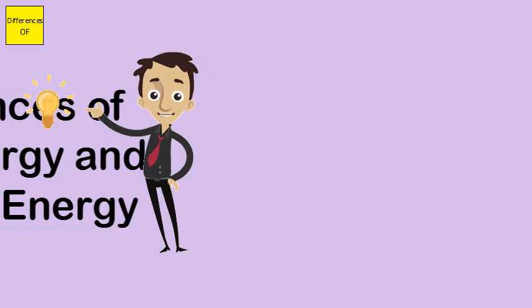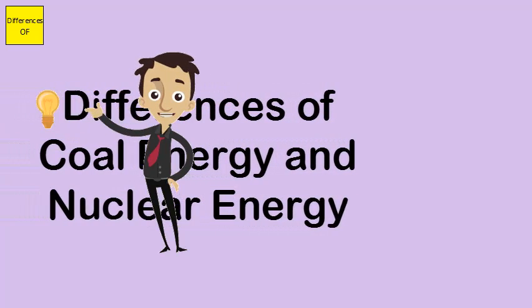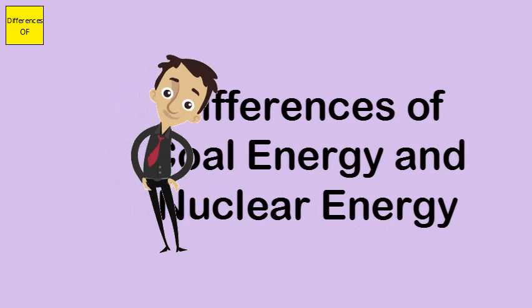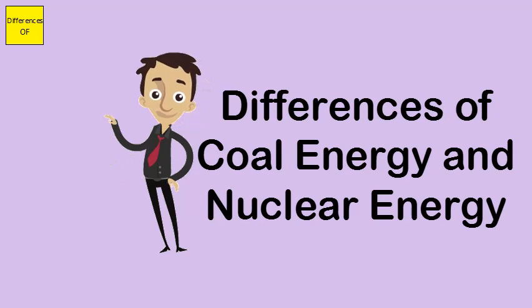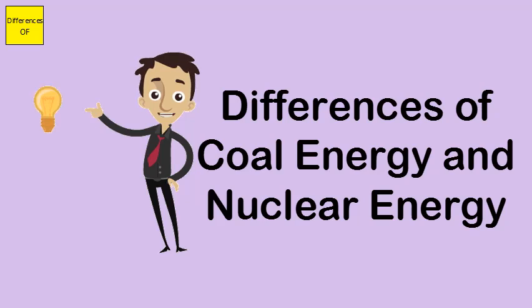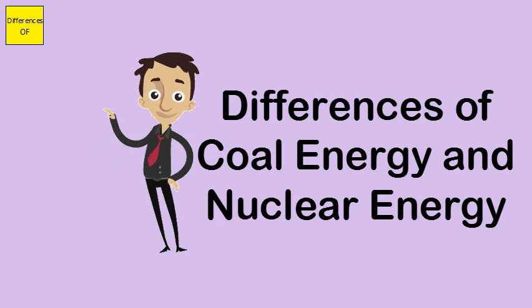Differences between coal energy and nuclear energy. Coal energy uses coal, a fossil fuel that is burned to produce heat. Nuclear energy uses enriched radioactive elements like uranium.